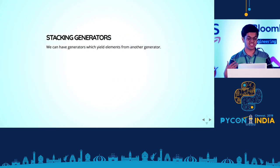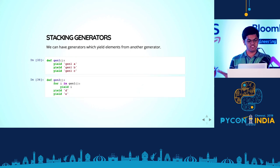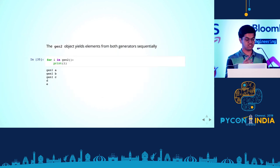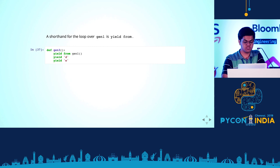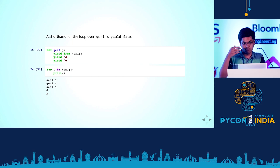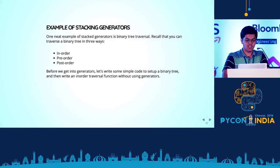You can also stack generators. Let's say we have one simple generator that yields three items, and another which first yields everything in the first generator and then yields its own stuff. There's a nice shorthand in Python called yield from. Instead of writing a for loop, you say `yield from gen_one`. This delegates all next calls into gen_one, and once gen_one finishes, you go back to your own yield statements.